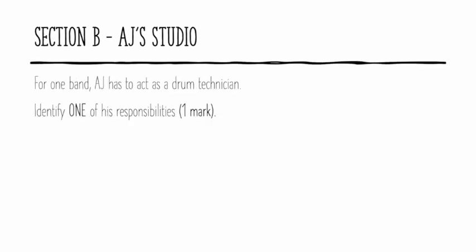The first question is quite simple: for one band, AJ has to act as a drum technician — identify one of his responsibilities. Pause the video and answer this. Possible answers include: setting up the drums, tuning the drums, changing the drum heads, adjusting them, or fixing them as needed.